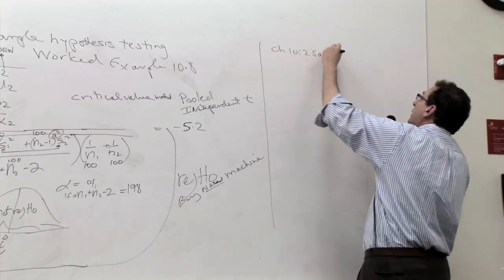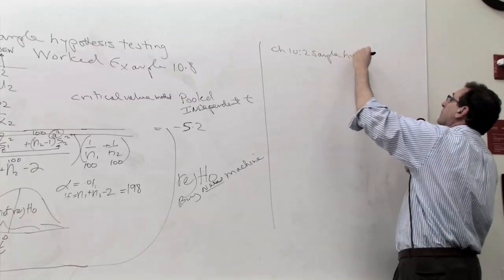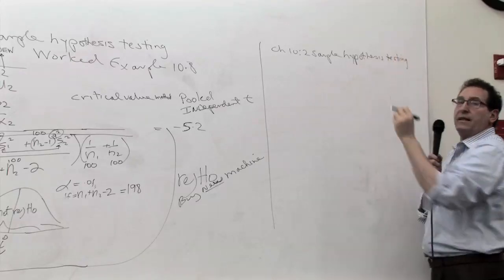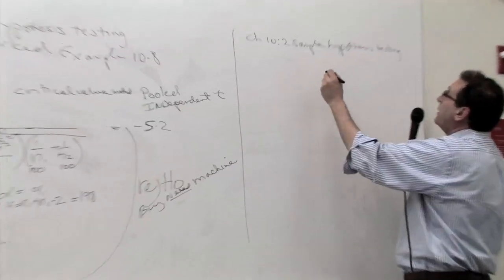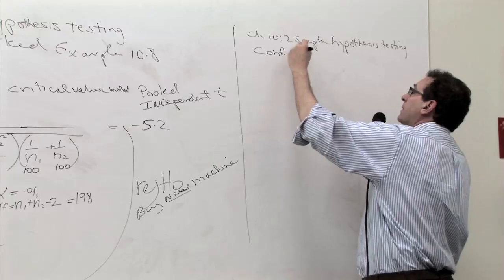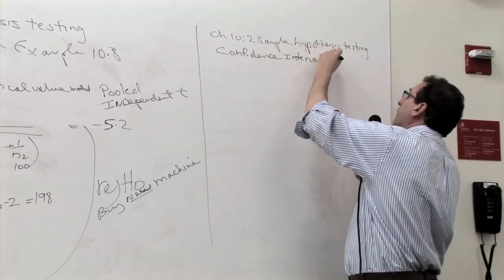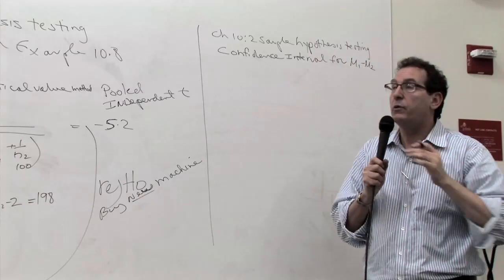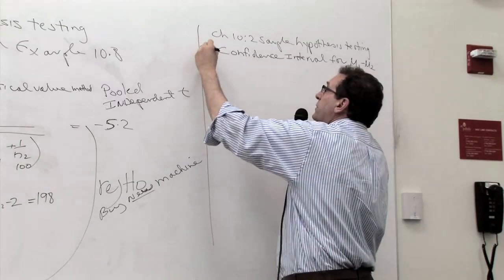Two-sample hypothesis testing, but in particular, we're going to focus on a confidence interval for μ1 minus μ2. This is quite important, and I don't know why I always leave it out of my other classes, but we're going to do it now. In fact, in particular, maybe a 95% confidence interval.